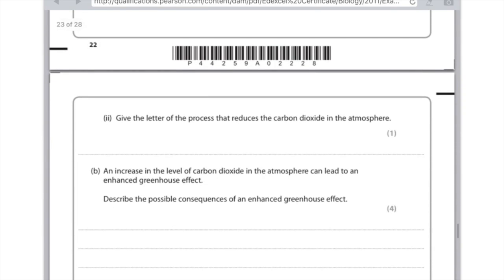An increase in the level of carbon dioxide in the atmosphere can lead to an enhanced greenhouse effect. Describe the possible consequences of an enhanced greenhouse effect. Remember that the greenhouse effect leads to global warming. And then therefore, if the temperatures rise, what you find is the polar ice caps will melt. Because they've melted, it means that there'll be a rise in sea level leading to flooding. And then if you're feeling jazzy, you can write that that will lead to habitat destruction or extinction of species.